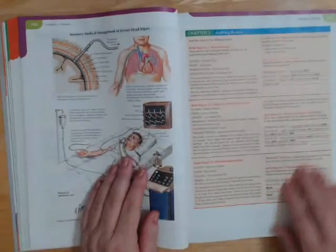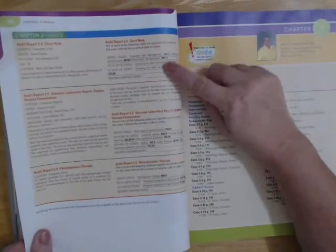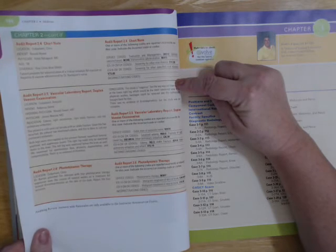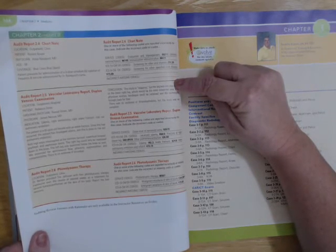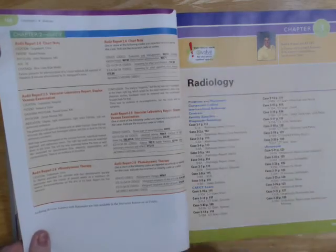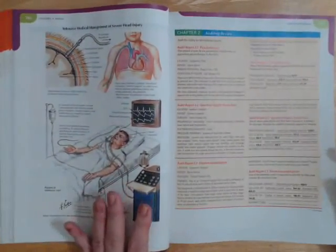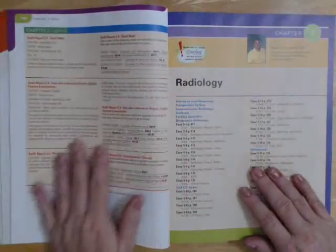Then we go into our auditing reviews. These are great for you to read, see how they coded it, and see if you can find their mistake. Once in a while they don't have a mistake, sometimes they do. This is really good practice for you. So that was the medicine section, and next will be radiology.